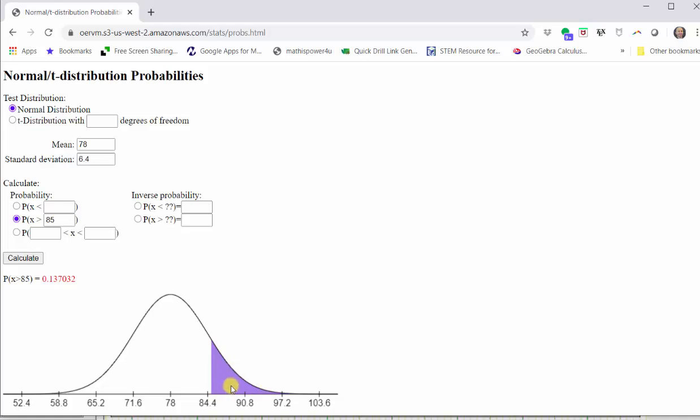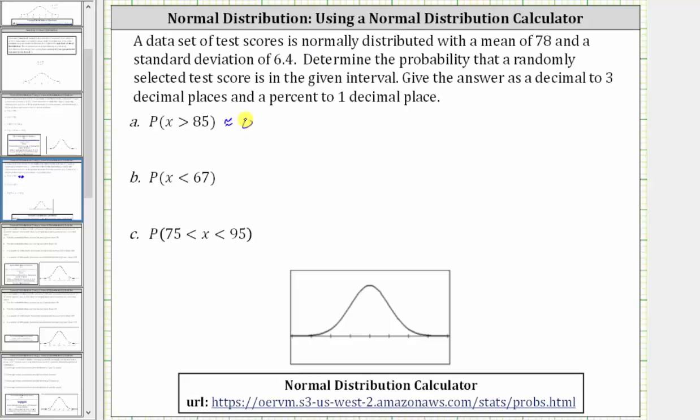This area represents the probability, which to three decimal places is approximately 0.137. Let's go ahead and record this. Which is equal to 13.7%. So we gave the probability as a decimal to three decimal places, as well as the percent to one decimal place.